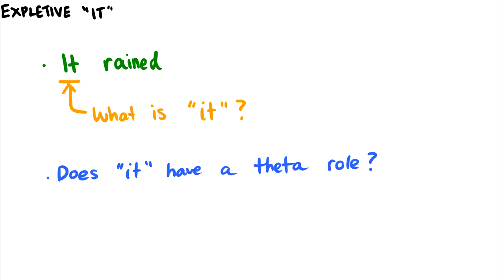It doesn't refer to anything in the discourse. It rained. Well, I'm just making a statement that outside it rained. There's no real way to paraphrase what this it is. It's not as if it is referring to outside. It just refers to the fact that an event has occurred and that that event is raining.